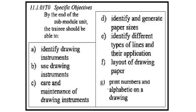The specific objectives are as follows. By the end of this sub-module, the trainee should be able to: identify drawing instruments and use those instruments; perform care and maintenance of the drawing instruments; identify and generate paper sizes; identify different types of lines and their applications; and complete the layout of drawing paper.